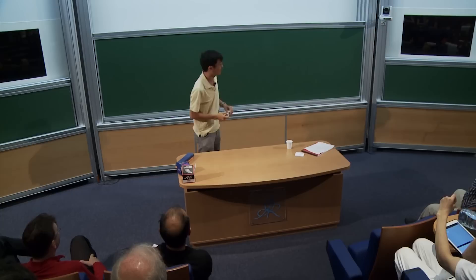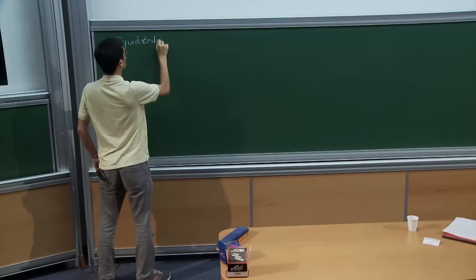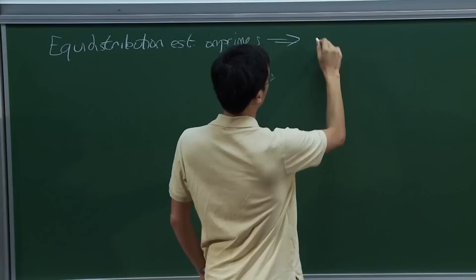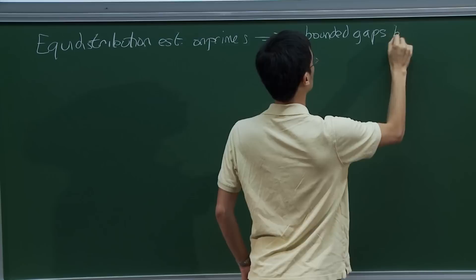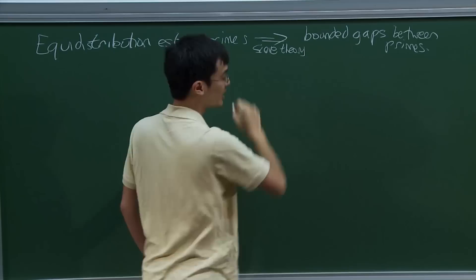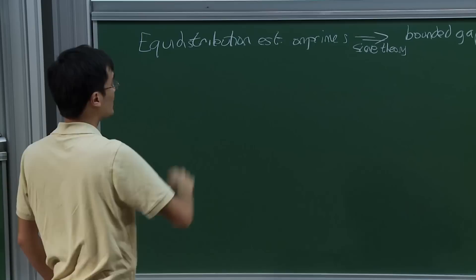I'll begin by finishing something I wanted to do last lecture but ran out of time, which is to discuss the parity problem. Last time we were talking about how to use equidistribution estimates, mostly on primes, and how to use this to prove results like bounded gaps between primes. We now have a quite well understood sieve-theoretic mechanism, mostly based on the Selberg sieve, for converting estimates on primes in arithmetic progressions to bounded gaps between primes.